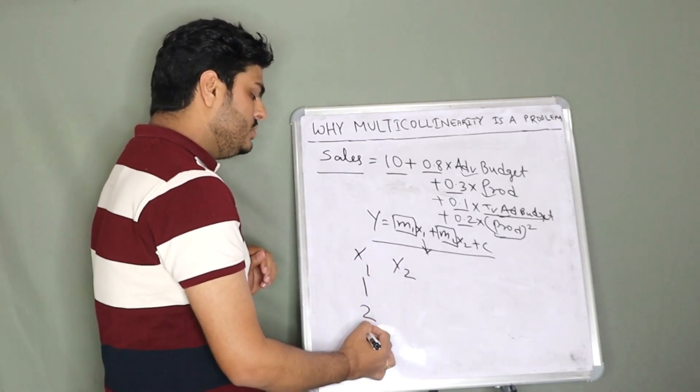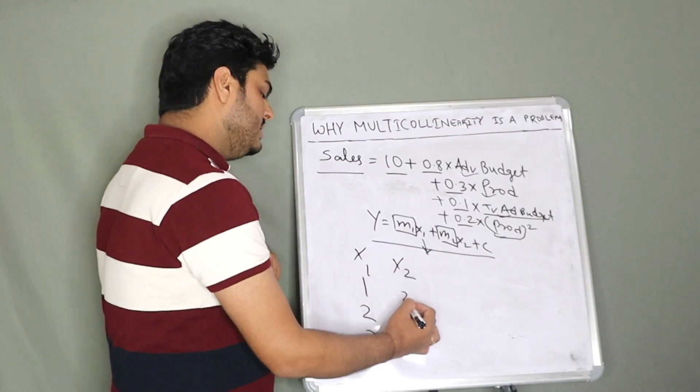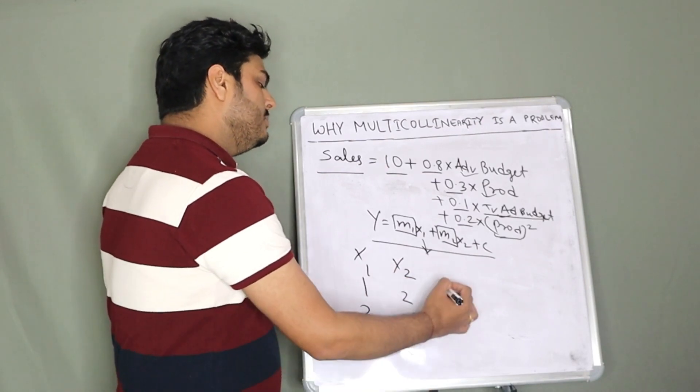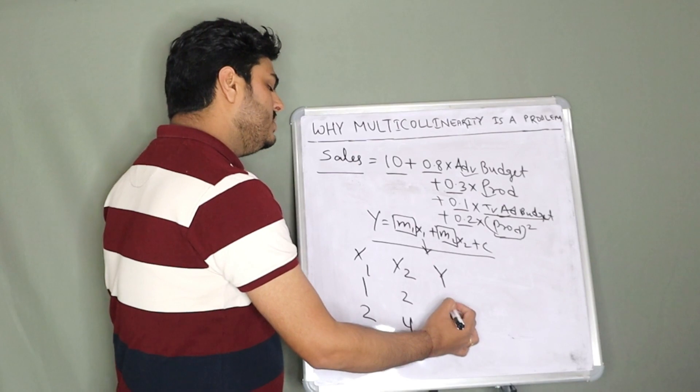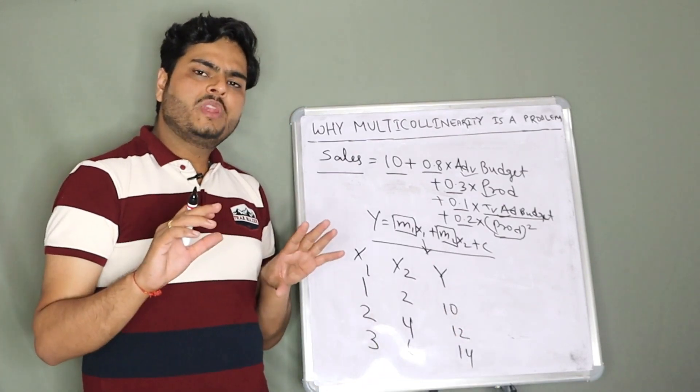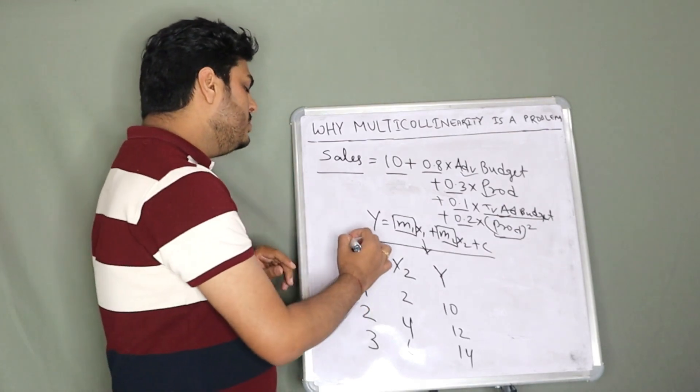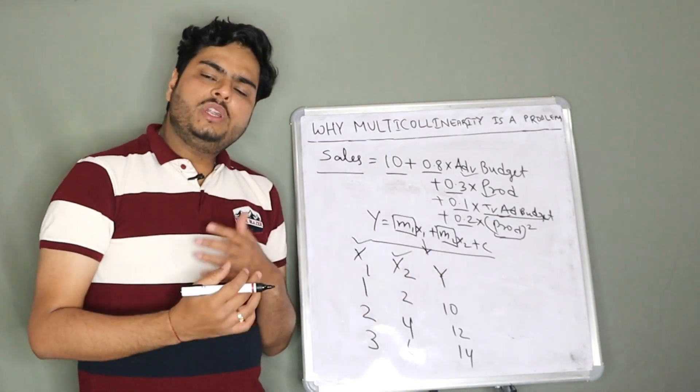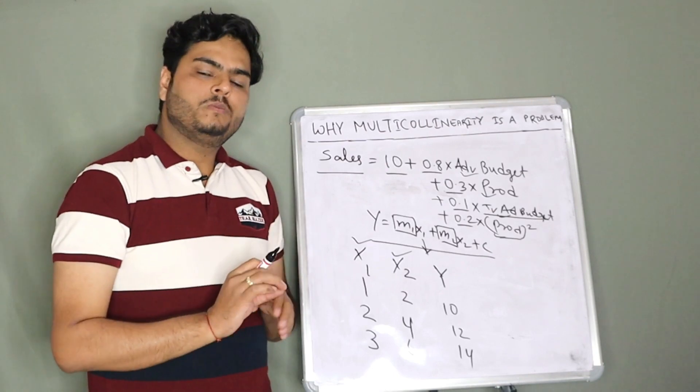In x1, you put the value 1, 2, 3. In x2, you put the value 2, 4, and 6. Put something in y: any value that you want, 10, 12, 14 let's say. Create this simple data in Python. Run a regression model with both these variables. See what is your coefficient and what is your p-value.